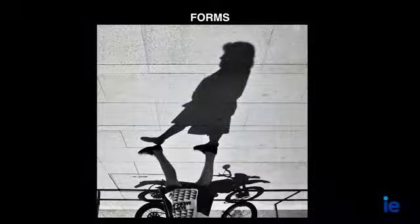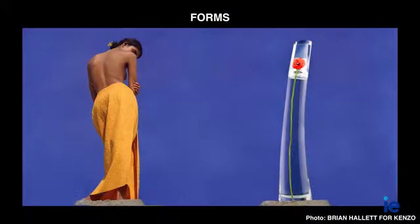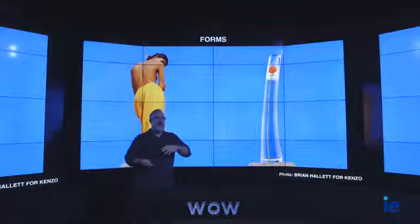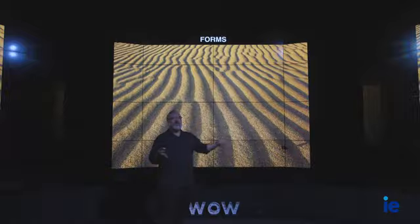Now let's move to forms. What's the difference between shapes and forms? Forms are things that imitate shapes we recognize — not actually the thing itself, but a representation of it. Here we see a woman — but it's not actually a woman, it's a shadow of a woman, and it evokes the response of recognizing what this form is supposed to be. We can also use repeating forms: in this Kenzo ad, the body of the woman mirrors the shape of the bottle. Looking at this image of sand, it's not so much a story about sand as it is about the form the sand creates in this feeling of waves.